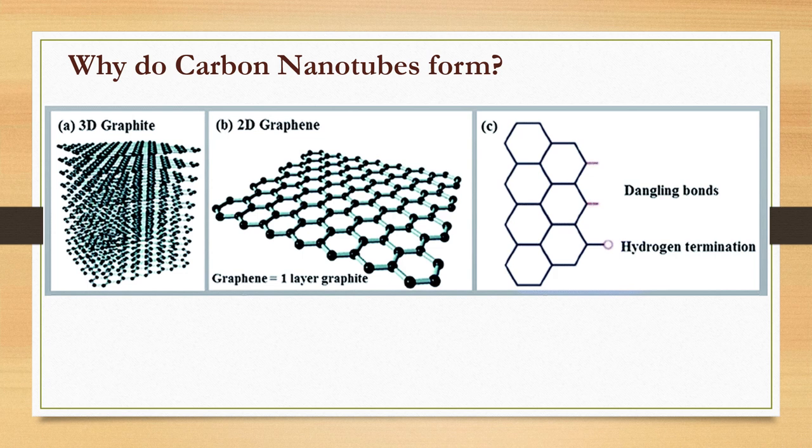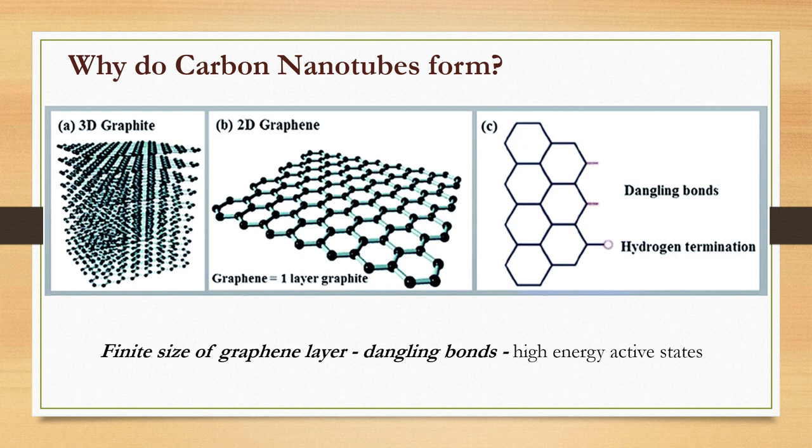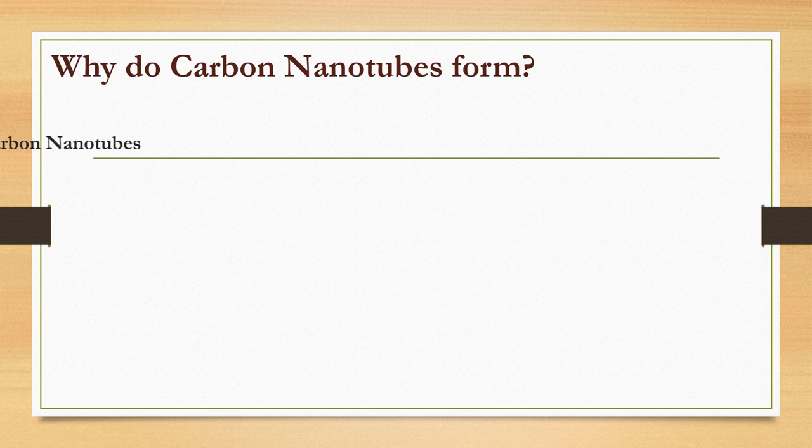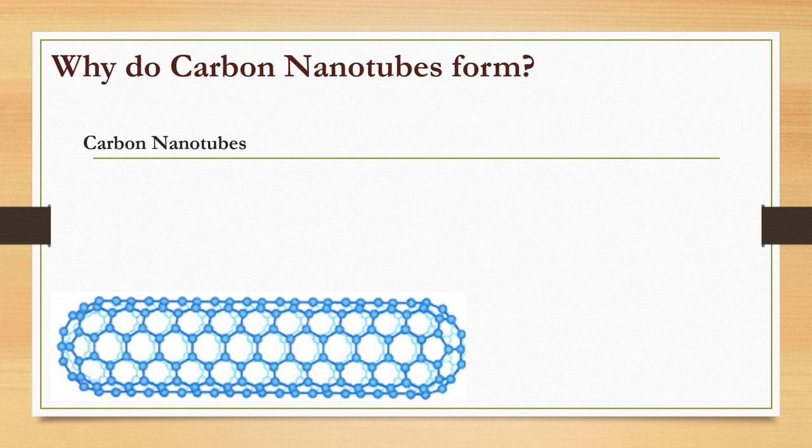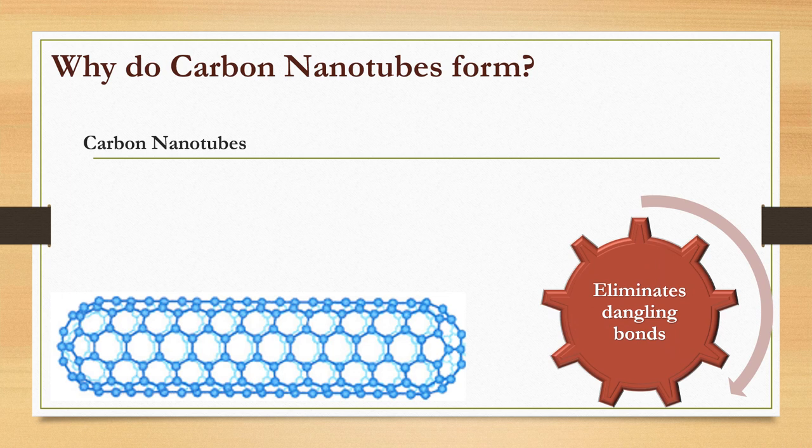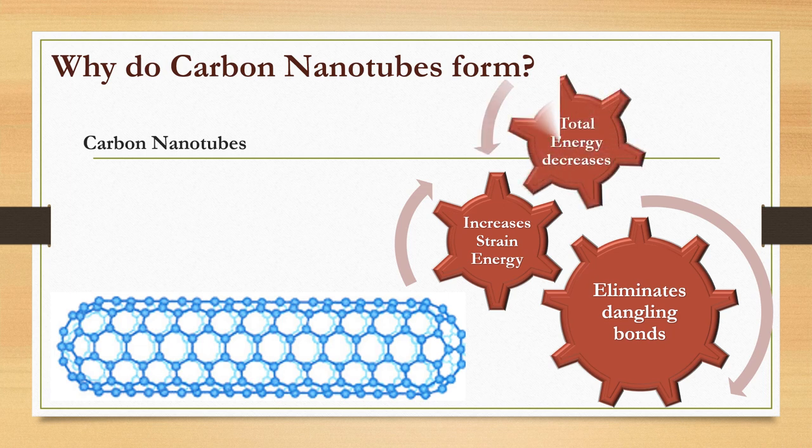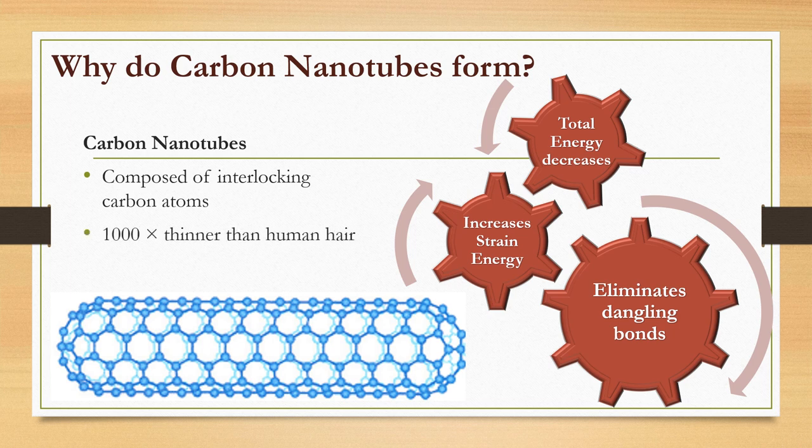The finite size of the graphene layer has many dangling bonds corresponding to high energy active states. The formation of carbon nanotubes eliminates these dangling bonds, leading to an increase of strain energy and ultimately decreasing the total energy of the system.